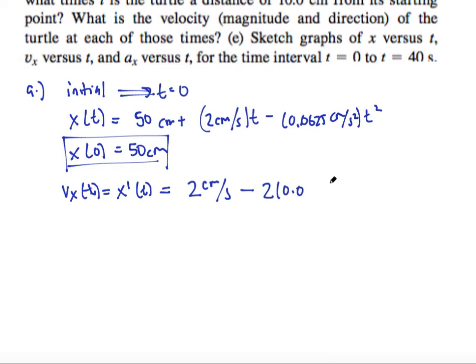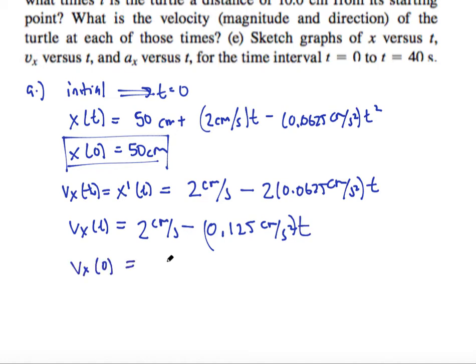2 times 0.0625 centimeters per second squared, times reducing this power by 1, just becomes t. So here is my new function for v of x, or v in the x direction. So that will be 2 centimeters per second, minus 0.125 centimeters per second squared, multiplied by t. So v x initial, so at t equals zero, is going to be simply 2 centimeters per second.